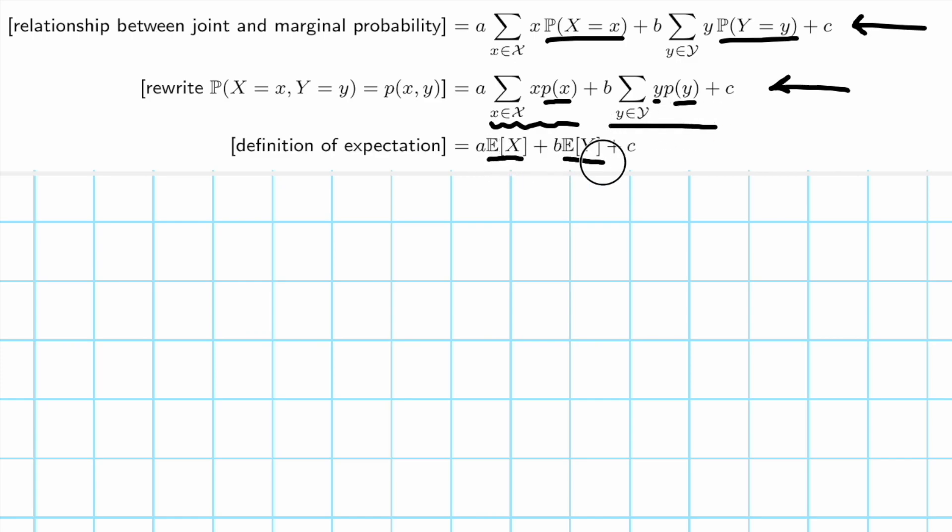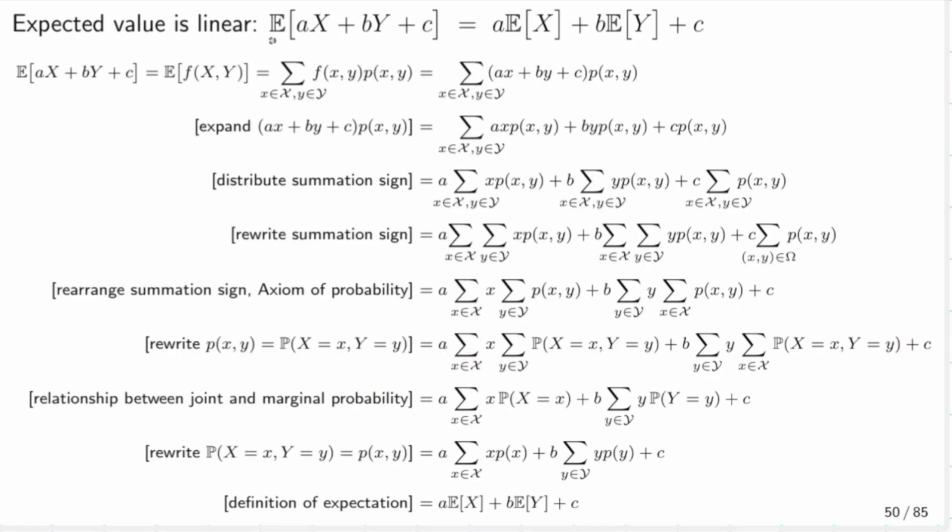So we have proved that the expected value of a linear function is just the linear function of the expected value. This proof is very, very long because I try to make sure everything is clear.